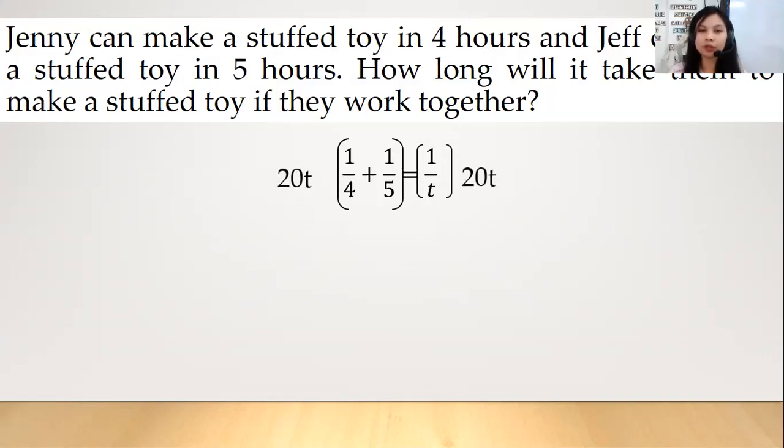Okay, so same procedure katulad sa ginawa natin kanina. So, 20T divided by 4 is 5T times 1 is still 5T. 20T divided by 5 is 4T times 1 is 4T. And then, ayan po, 20T divided by T is maka-cancel out po si T natin. And then 20 times 1 is 20 po. Okay, ngayon, yun, combine like terms tayo. 5T plus 4T is 9T. Okay, and then 20 naman po yung ating, yun, yun na sa ating right side. Hindi ko pa siya ginalam.